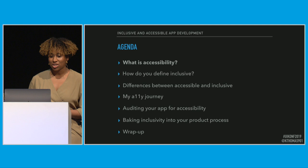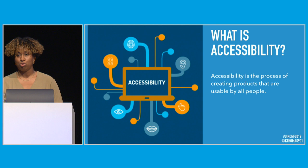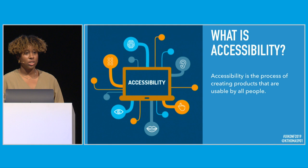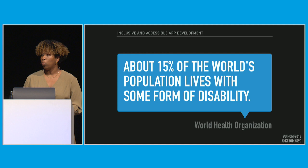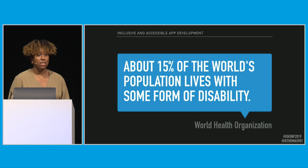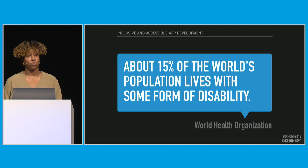What actually is accessibility? Accessibility is the process of creating products that are usable by all people. This is incredibly important, especially when we talk about accessibility in technology — we're specifically talking about accessibility for folks with differing abilities. About 15% of the world's population lives with some form of disability. So if you're building something that is inaccessible, that means you're alienating 15% of the world's population.